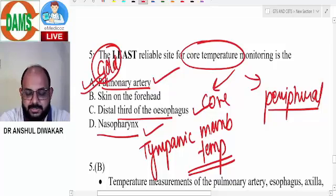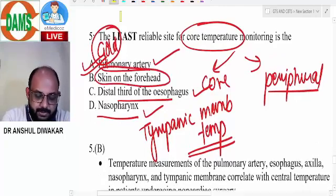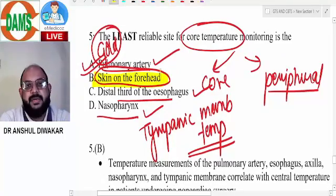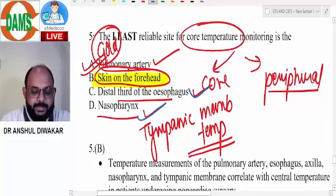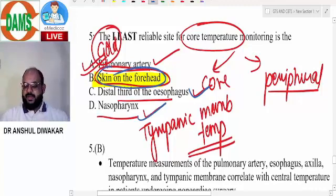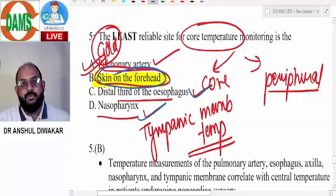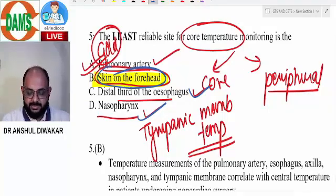Which is the least reliable amongst these? Skin on the forehead, because it's actually peripheral temperature. Rest all are core body temperature. These were the five questions I wanted you to know, giving you overall revision of what's asked in the exam. All the very best, thank you.